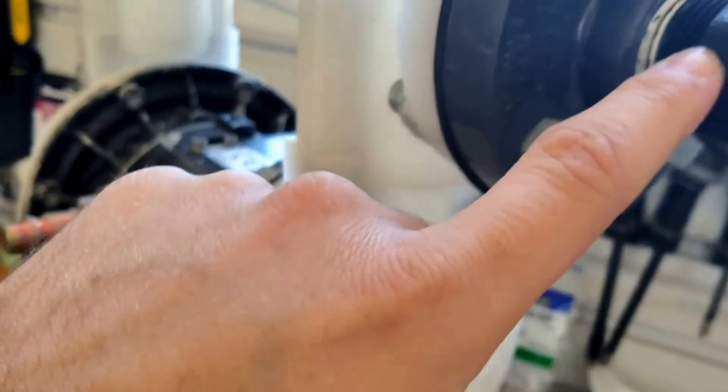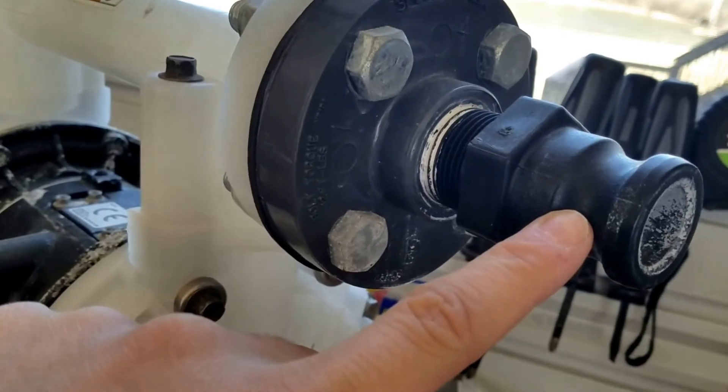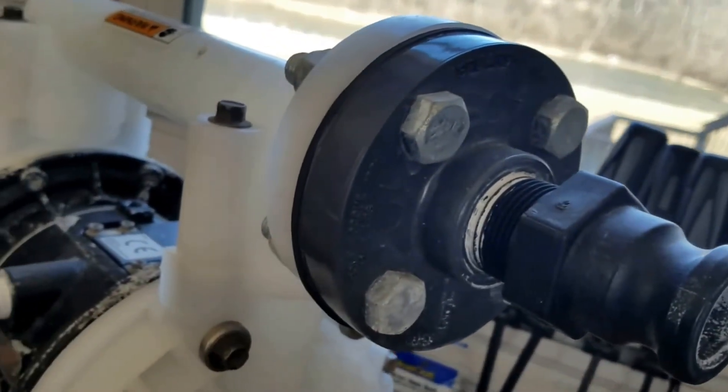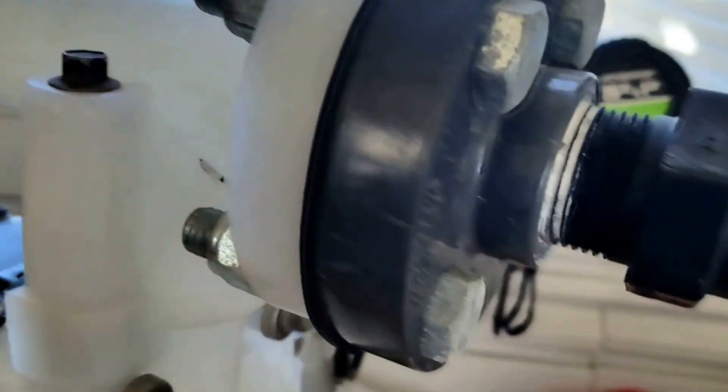And then you have to buy a schedule 80 flange adapter that goes down to one inch so you can put your cam lock fittings on there. So the difference is, with this you just need a fitting and you can screw right in. This one here, you have to do a little bit of modification to get it to adapt to it.